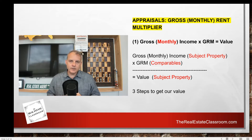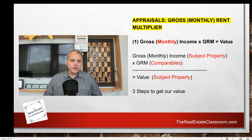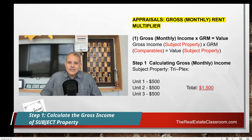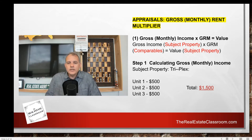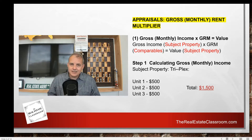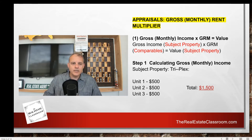It's a three-step formula. Step number one: we need to calculate the gross monthly income of our subject property — the property we don't know the value of. Let's say it's a triplex with three units, each renting for $500 per month. That means this triplex produces $1,500 in gross income or gross rents. That is step number one — we've calculated the subject property's gross monthly income.